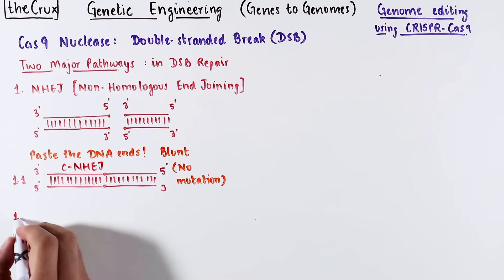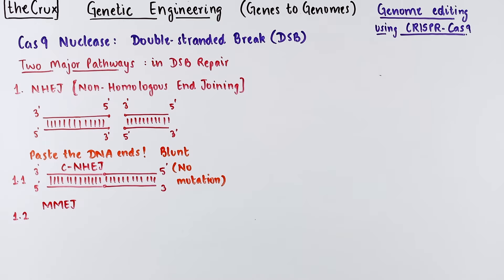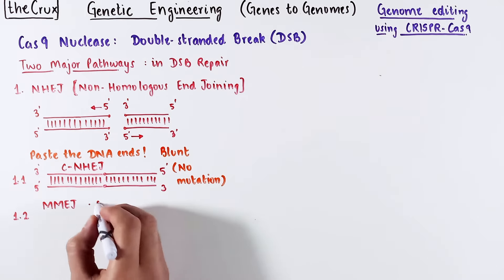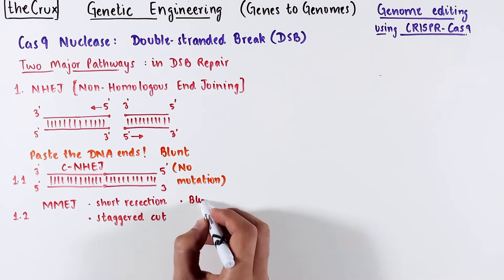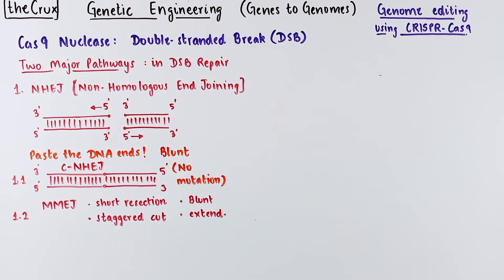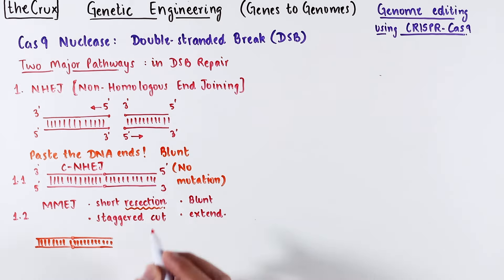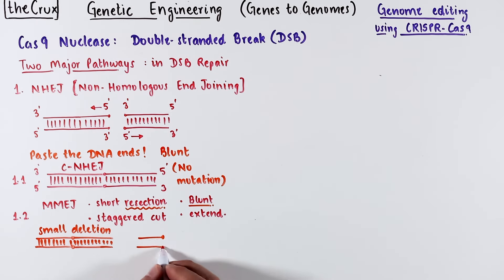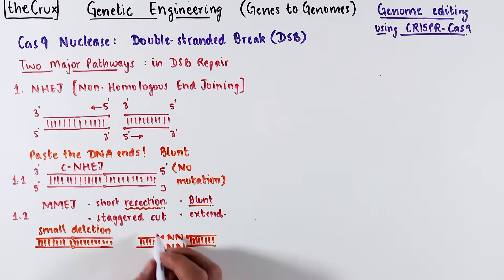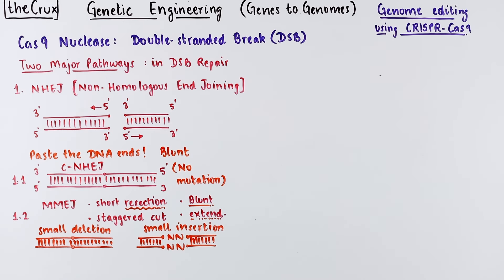Alternatively, there is a variation of NHEJ called microhomology-mediated end joining, where the ends of the broken DNA are resected. This can convert a blunt end into a staggered end, or a staggered end can be filled in to make a blunt end. Depending on the choice, the blunting and resection can delete some of the bases from the broken DNA, resulting in a small deletion. Conversely, if the cell extends the broken staggered cut, extra bases may be added to the broken ends, generating a small insertion. The indels resulting from this repair pathway are therefore error-prone.